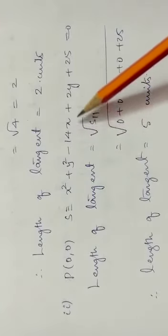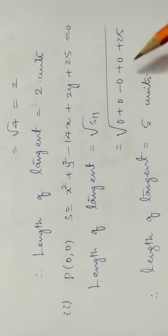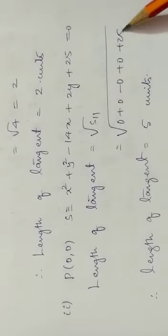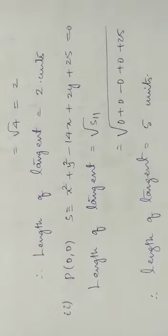x becomes 0, y becomes 0. So, 0 plus 0 minus 0 plus 0 plus 0 plus 25. Everything cancels, 25 remains. Root of 25 is 5. So, length of tangent is 5 units. Right.